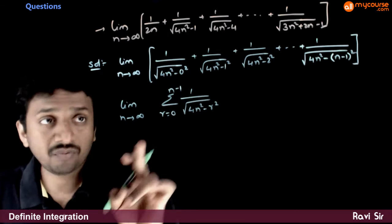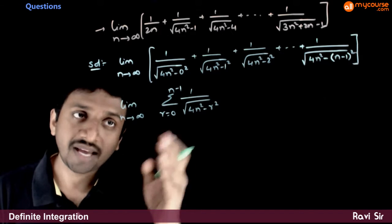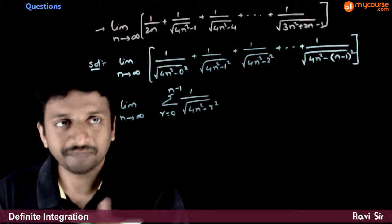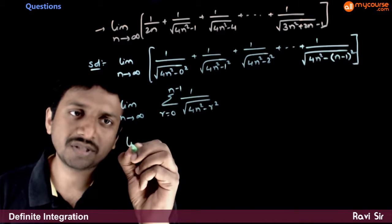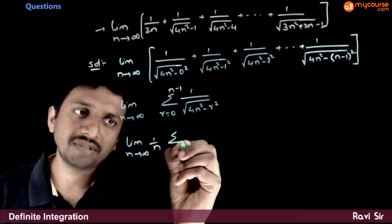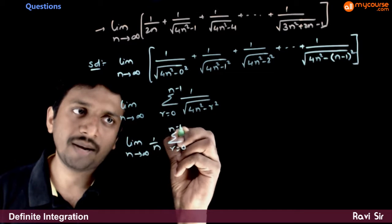Now, if I have to convert this into a definite integral, I need to have a 1 by n outside and r by n within sigma. If I take a 1 by n outside that is limit n tends to infinity, 1 by n times sigma r is equal to 0 to n minus 1.